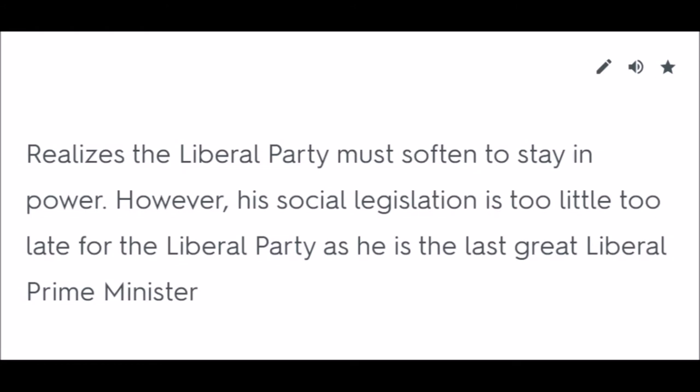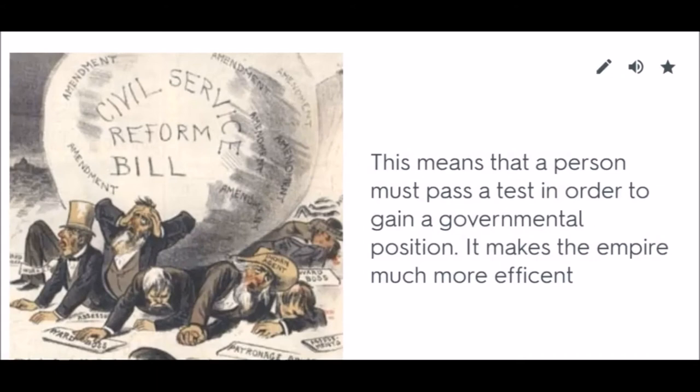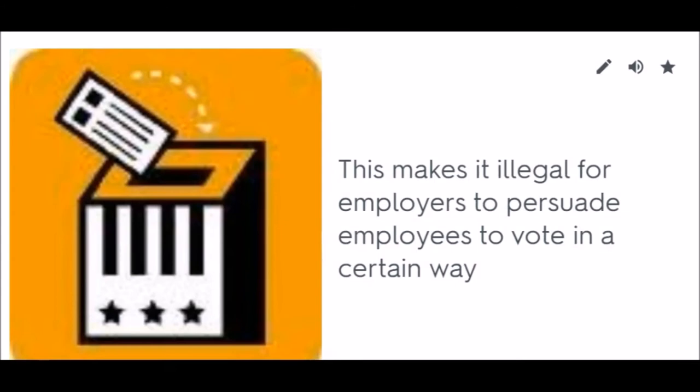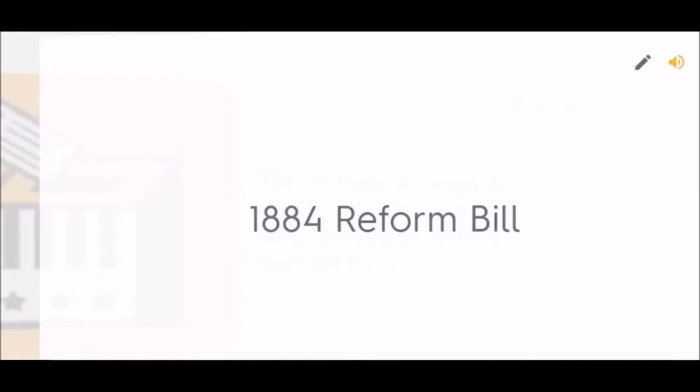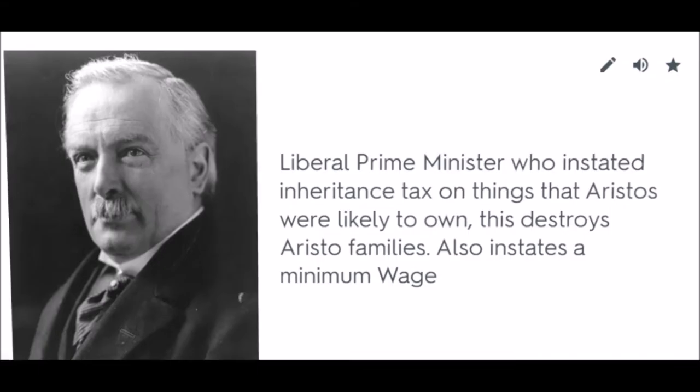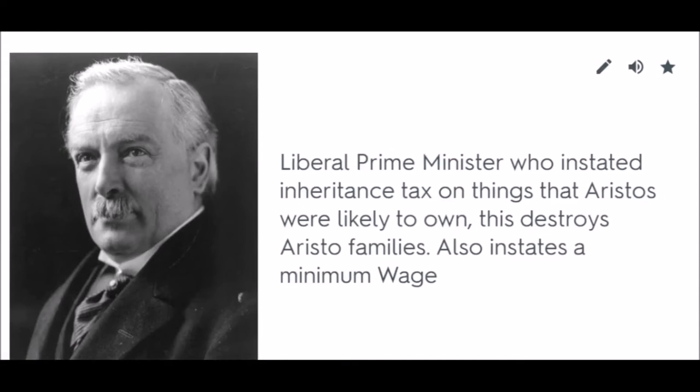Civil Service Reform Bill: A person must pass a test in order to gain a governmental position, making the Empire much more efficient. Ballot Act: Makes it illegal for employers to persuade employees to vote in a certain way. 1884 Reform Bill: Extends the right to vote to farmers, so there is finally universal male suffrage in Britain. David Lloyd George: Liberal Prime Minister who instated an inheritance tax on things aristocrats were likely to own. This destroys aristocratic families. Also instates a minimum wage.